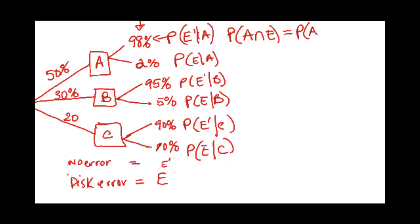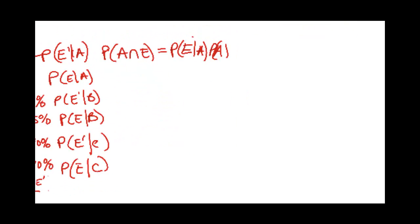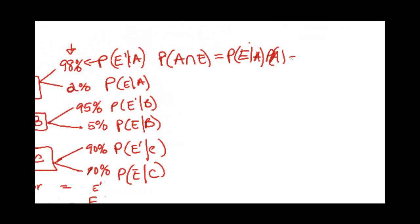And it would be the probability of error given it came from A times the probability of A. And that's, that would be 0.5 times 0.98.